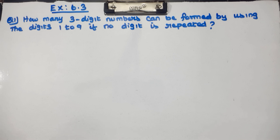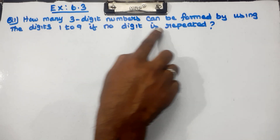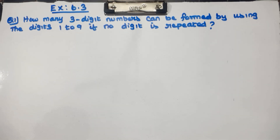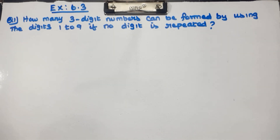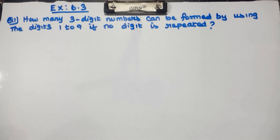Question number 1: How many 3-digit numbers can be formed by using the digits 1 to 9 if no digit is repeated? We will form 3-digit numbers using 1 to 9 with no repetition. This is a permutation problem. Permutation means arrangement, and combination means selection.